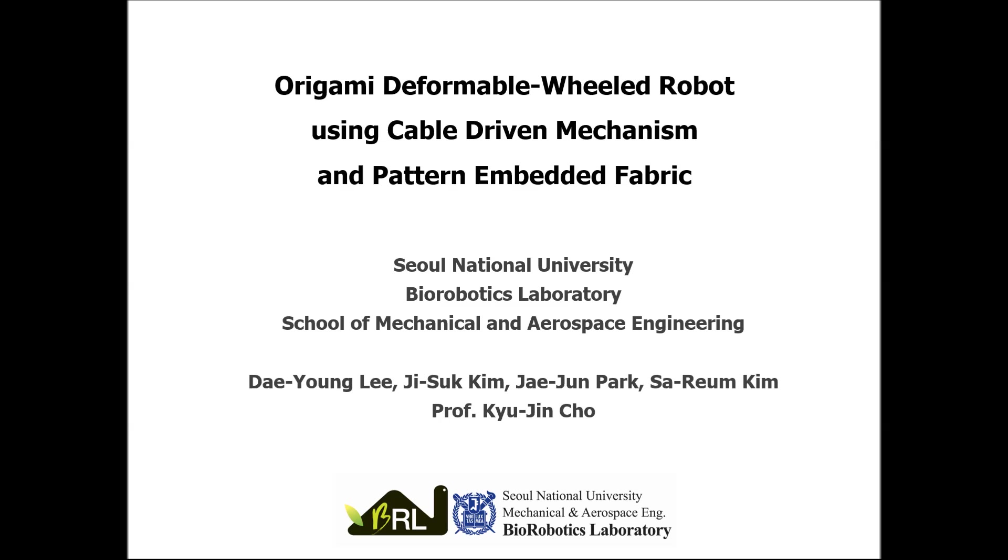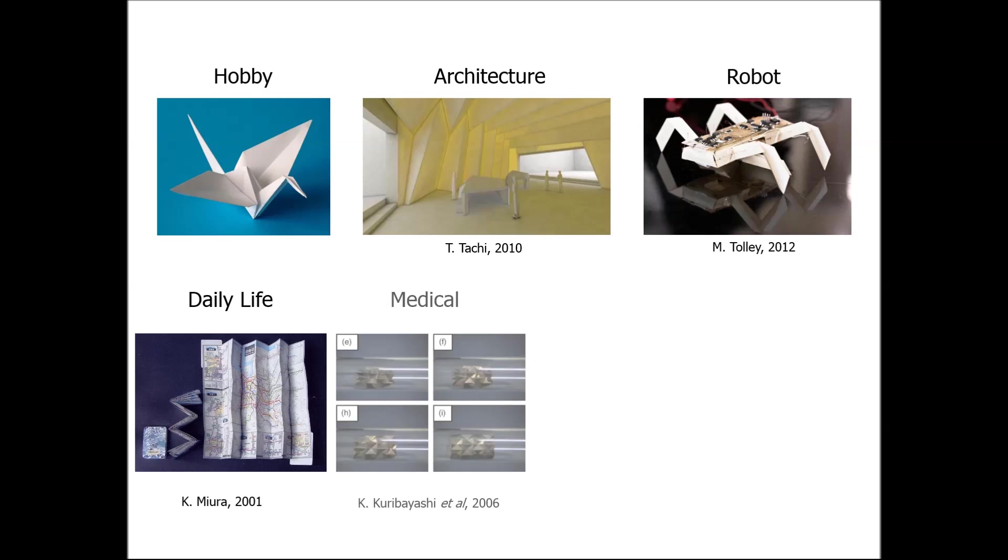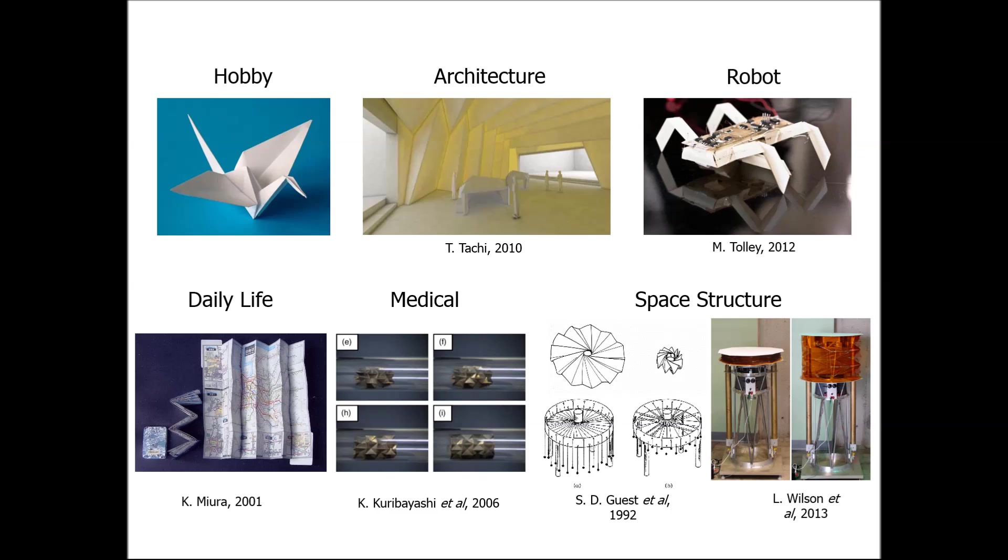This is the video about fabrication of origami wheel using pattern-embedded fabric and its application to a deformable mobile robot. Origami is the art of paper folding. From hobby to space structure, origami has been used in various ways because of its unique characteristics.